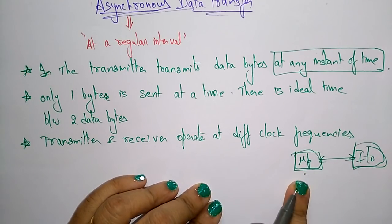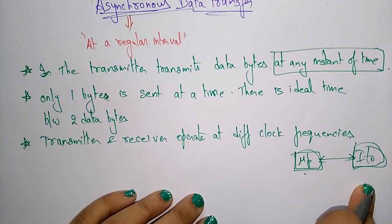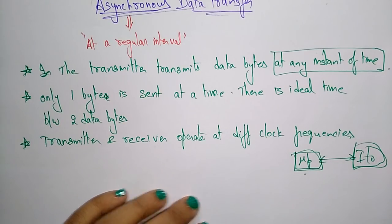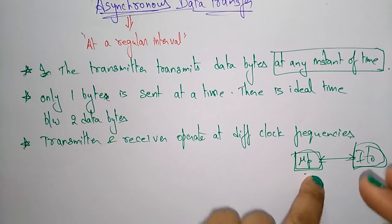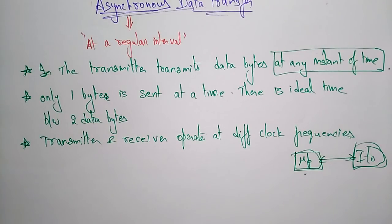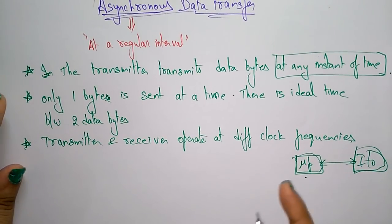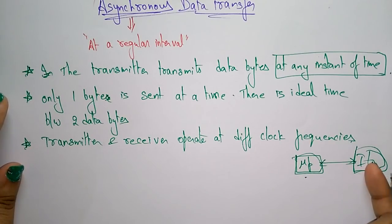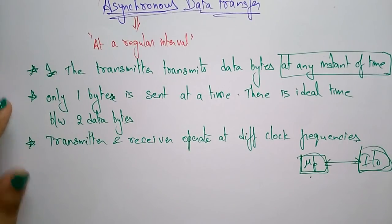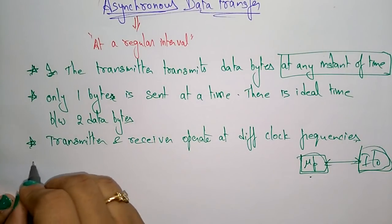The microprocessor clock frequency is different from the input/output clock frequency. This is one example of asynchronous data transfer — between input/output and the microprocessor, data is always transferred as asynchronous data transfer. Let me write that point.